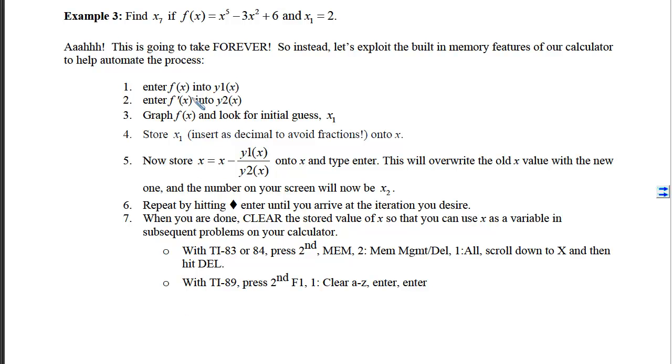The first thing we're going to do is we will enter f of x into y1, just like we did before. We'll enter f prime of x into y2, which is also like we did before. And if x sub 1 is not given to you, then you will graph f and you'll look for an initial guess. And for most people, that is just an integer that's close to the x-intercept. In this case, though, I gave you that initial guess as x sub 1 equaling 2.